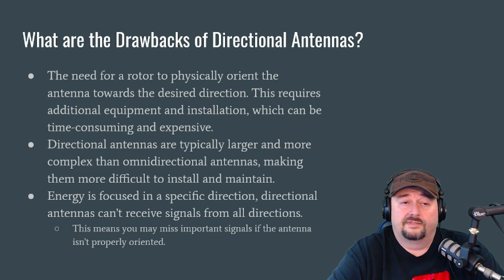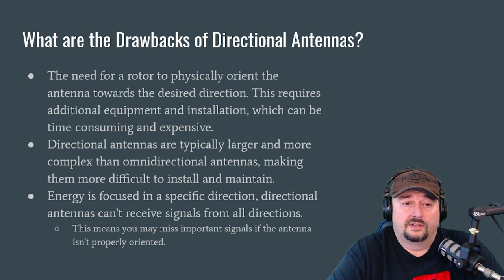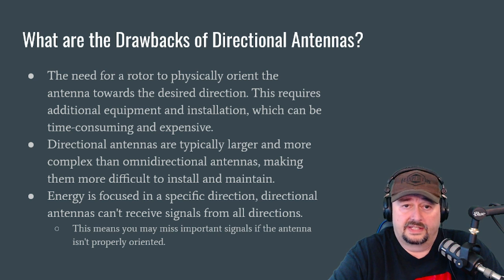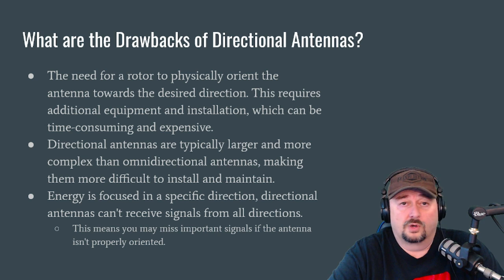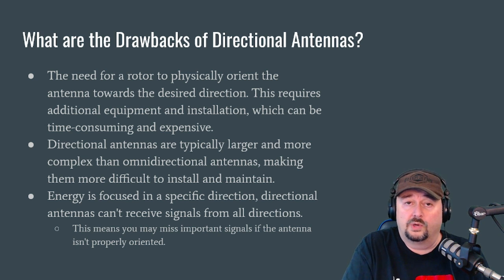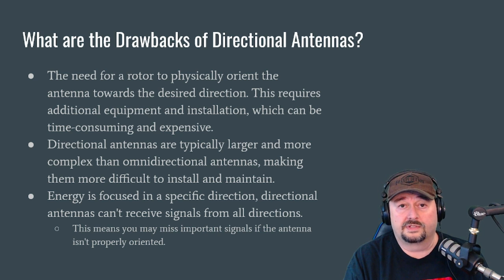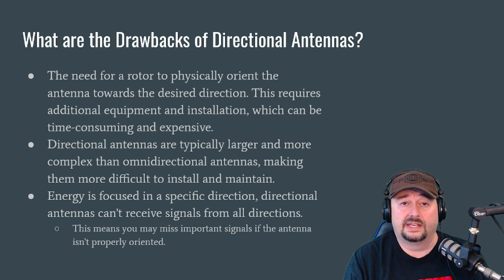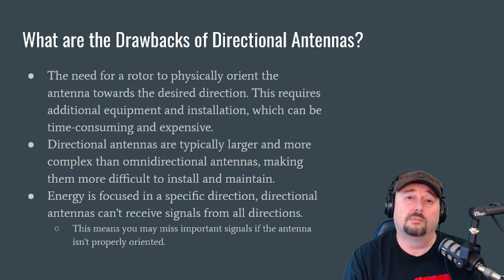We're talking about all these positive things, so let's talk about some of the drawbacks. Typically for a directional antenna, you need a rotor to physically orient the antenna in the desired direction. This requires additional equipment, is a more complex installation, and can be time-consuming and expensive. You don't need a rotor for a handheld 2-meter Yagi — but for larger HF antennas, you'd use a rotor at a permanent home, QTH, or club location.